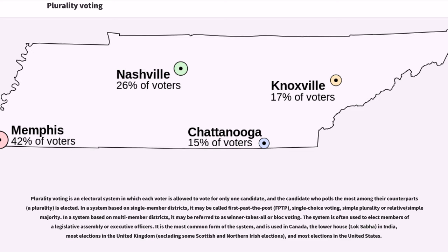The system is often used to elect members of a legislative assembly or executive officers. It is the most common form of the system, and is used in Canada, the lower house (Lok Sabha) in India, most elections in the United Kingdom — excluding some Scottish and Northern Irish elections — and most elections in the United States.